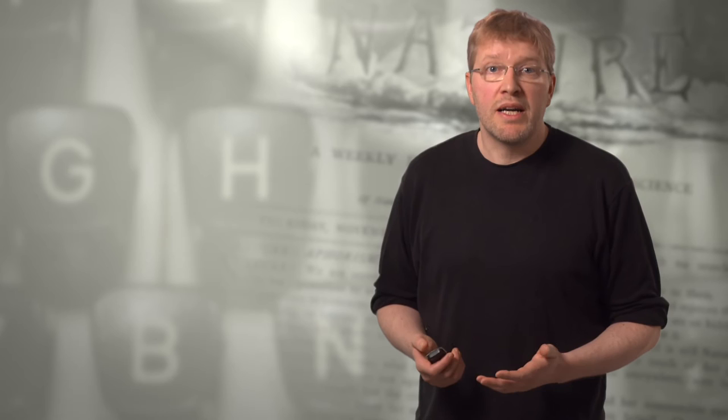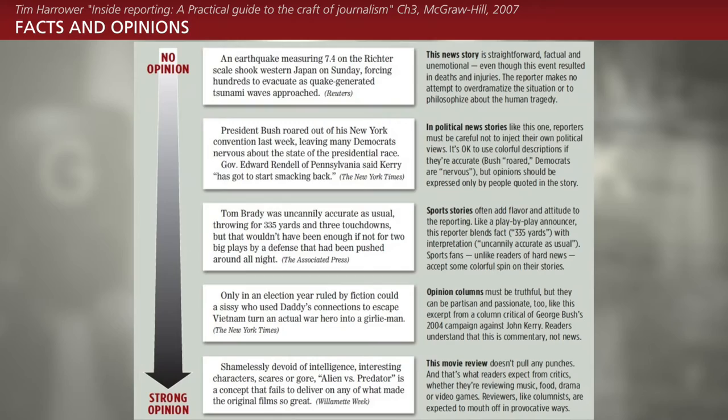This graph shows some typical genres of stories, and they can be placed on a continuum that ranges from being rigidly objective — like the earthquake announcement on the top — to the passionately opinionated movie reviews on the bottom. The earthquake story is straightforward, factual, and unemotional, even though it resulted in deaths and injuries.